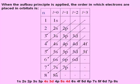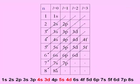The table shown here consists of 5 columns and 9 rows. In the first column, we have the values for the principal quantum number, n, listed from 1 to 8. In the first row, we have the values for the azimuthal quantum number, l, listed from 0 to 3. The table is then filled with the subshells that correspond to the n and l values as shown.